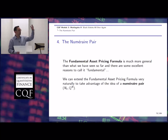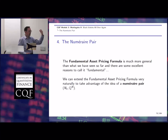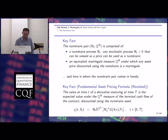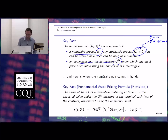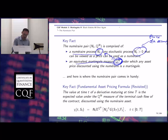The idea of the numeraire pair extends the fundamental asset pricing formula: if you discount by an asset, you can always find an equivalent martingale measure for another asset. A numeraire pair (N_t, Q_N) is comprised of a numeraire process N_t — any positive stochastic process interpreted as the price of a security — and an equivalent martingale measure Q_N. If you pick a numeraire, you can find an equivalent martingale measure, and vice versa. Because your fundamental asset pricing formula doesn't just work with B_t and Q; it works for any numeraire pair.